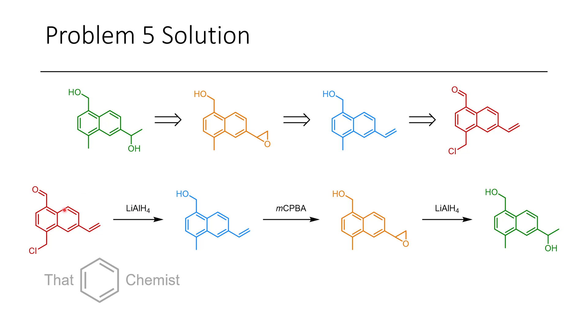First we do an LAH reduction on the starting material, that gets rid of the chloride and reduces the aldehyde to the alcohol. Then we do an MCPBA epoxidation on the styrene to get the styrene oxide. The styrene oxide can then be reduced with LAH to afford the final product. Relatively straightforward, just kind of have to be a little bit clever about it.